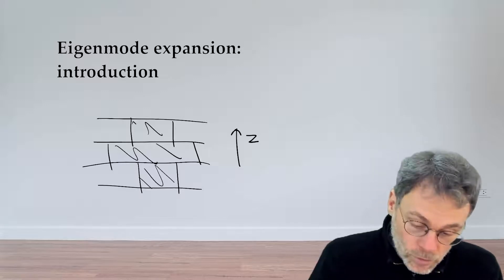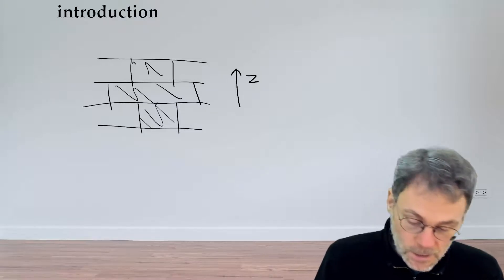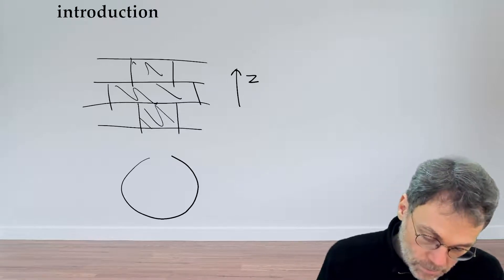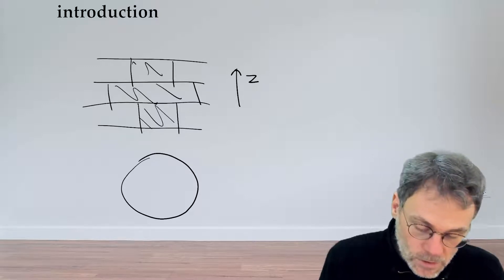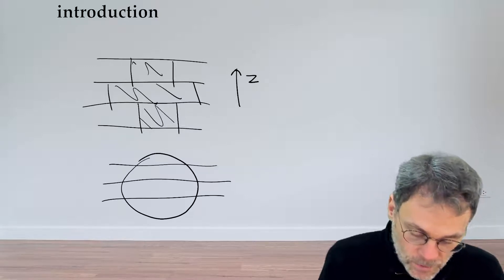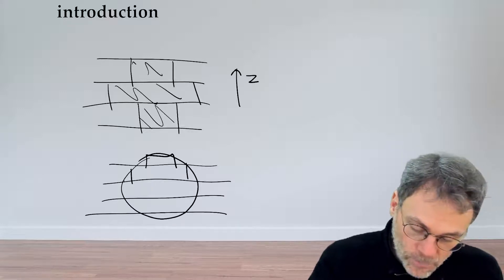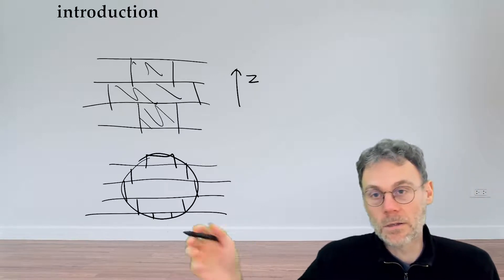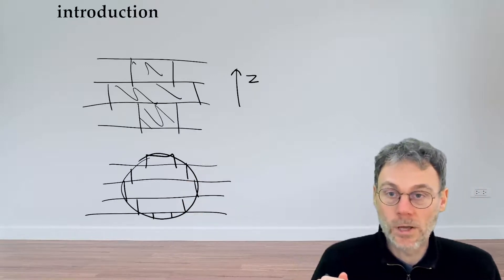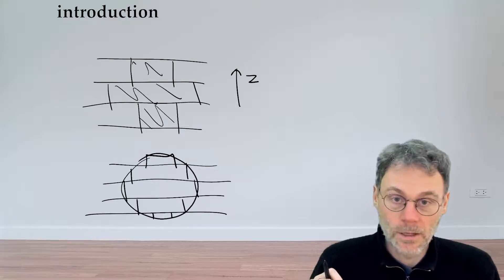If you're not working in a situation where your structure can be naturally expressed as a layered cake, like for example a structure like this, and if you really want to use an Eigenmode expansion method, if you're desperate, then in theory you can. But then you need to have some sort of staircasing approximation where you approximate this curved structure by this square approximation here, but in that case the method will not be as accurate and as efficient.